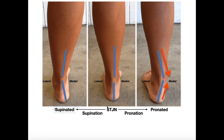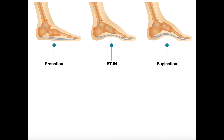Being able to identify a supinated versus pronated versus neutral ankle is useful, but there are other things that actually happen along with that. When looking at the lateral view of the foot, you can see that the size of the arch actually changes depending on whether we're in the neutral, pronated, or supinated state. In the pronated state, that arch is greatly diminished — the medial arch is collapsed. In subtalar joint neutral, it has a slightly higher arch. And then in the supinated state, this foot is going to have the highest arch of all.